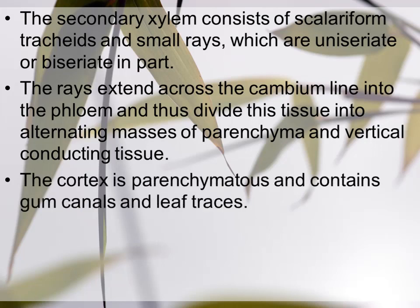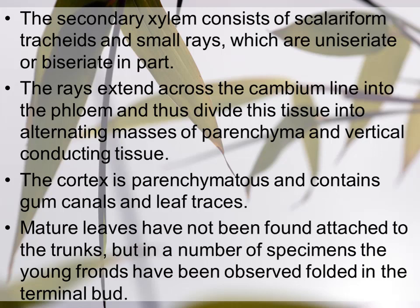The cortex is parenchymatous and contains gum canals and leaf traces. جو cortex ہے وہ parenchyma cells سے بنا ہے، اس میں gum producing canals ہوتے ہیں اور leaf traces بھی present ہیں۔ Mature leaves have not been found attached to the trunk, but in a number of specimens the young fronds have been observed folded in the terminal bud — یعنی young fronds بud حالت میں stem کے ساتھ terminally attached ہوتے ہیں۔